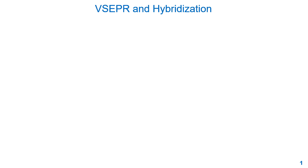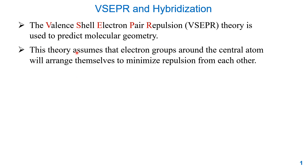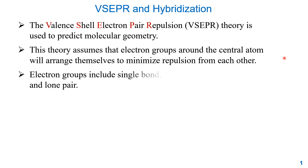VSEPR stands for Valence Shell Electron Pair Repulsion. This theory is used to predict the molecular geometry and also the electron group geometry. The theory assumes the electron groups around the central atom will arrange themselves to minimize repulsion from each other, because they all have the same negative charge. Electron groups include a single bond, double bond, triple bond, or lone pair.